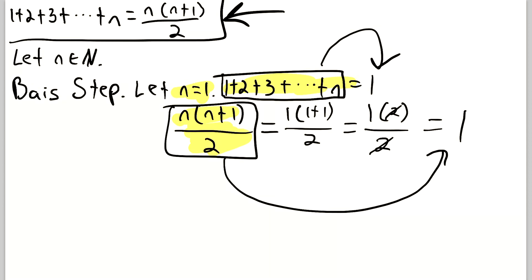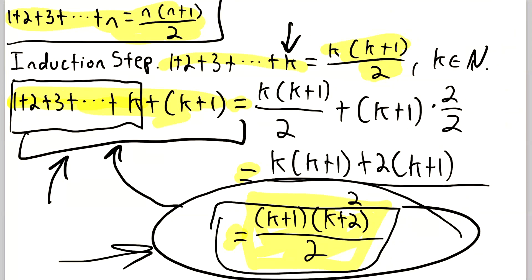We showed the proposition is true for the first natural number in the basis step, and in the induction step we showed that if it's true for some natural number it must be true for the next one. Thus the whole string of dominoes falls — the proposition is true for all natural numbers, from the first one to the next one and on and on. That is how an induction proof works.